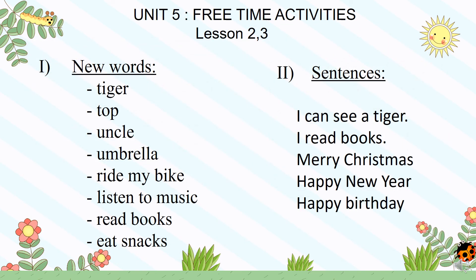Everyone, open your notebook and write down: Unit 5, Free time activities, Lessons 2 and 3. New words: Tiger, Top, Uncle, Umbrella, Ride my bike, Listen to music, Read books, Eat snacks. Sentences: I can see a tiger. I read books. Merry Christmas. Happy New Year. Happy Birthday.